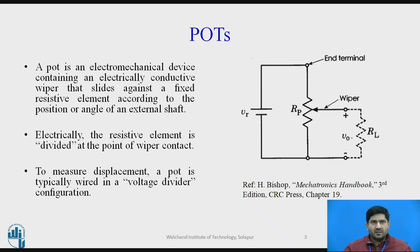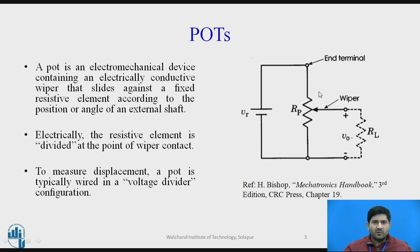Potentiometers you have studied since 11th, 12th and also during measurement systems class, so this is a quick review. A potentiometer, abbreviated as a pot, is an electromechanical device containing an electrically conductive wiper that slides against a fixed resistive element according to the position or angle of an external shaft. The resistive element is divided at the point of the wiper. To measure displacement, a pot is typically wired in what is called a voltage divider configuration, so as the wiper moves the output voltage changes and can be used to estimate the displacement.